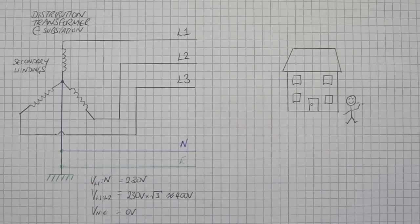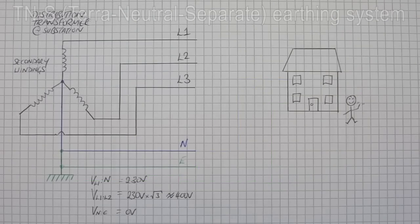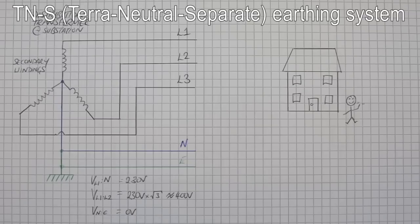The second way we can supply a mains supply to the household is the TNS connection. In this configuration the household is provided with one phase conductor, a neutral conductor, and a protective earth conductor. So three conductors enter the household and that is distributed around the house as normal.